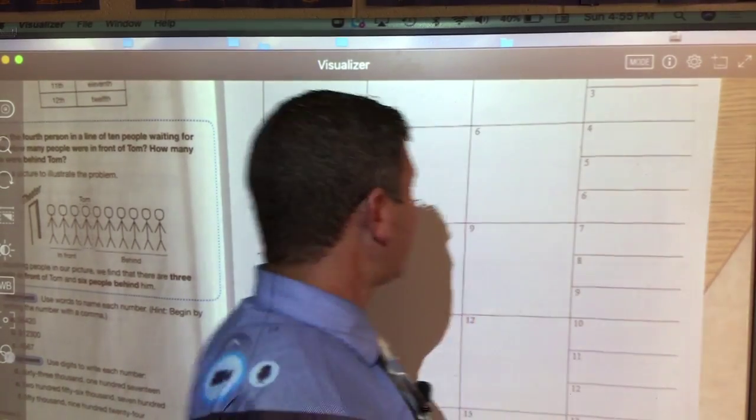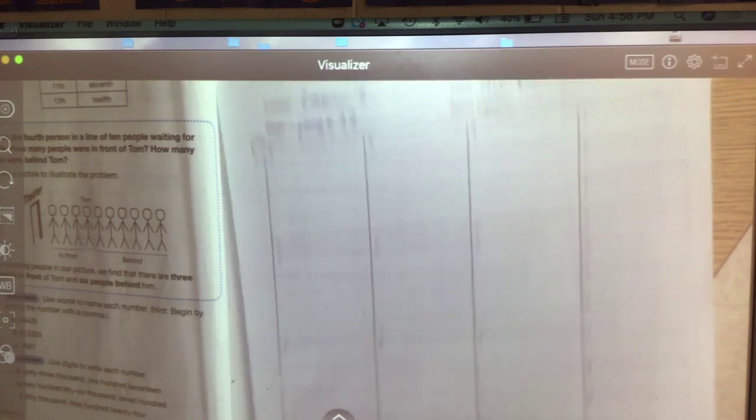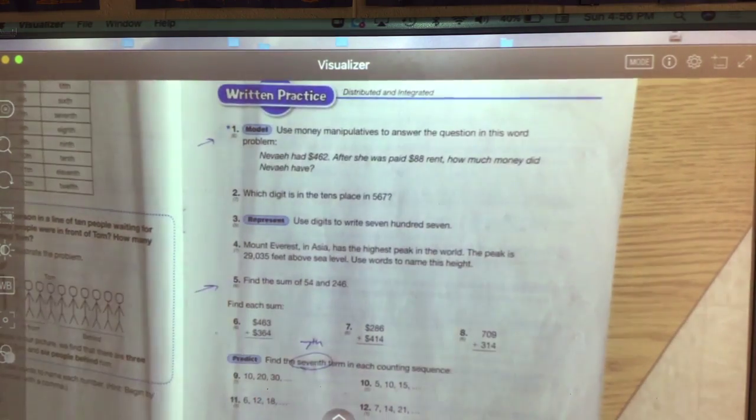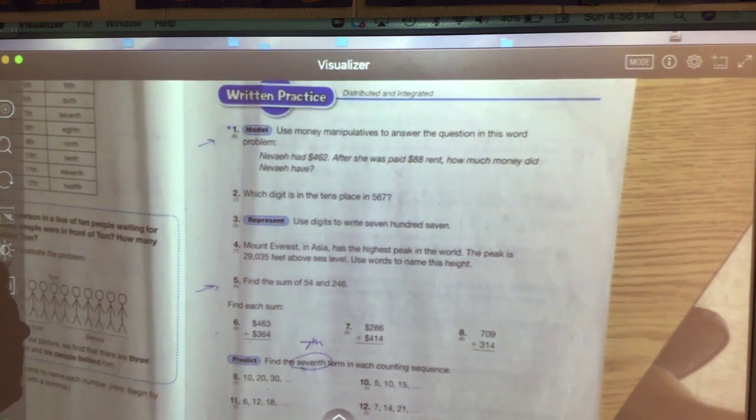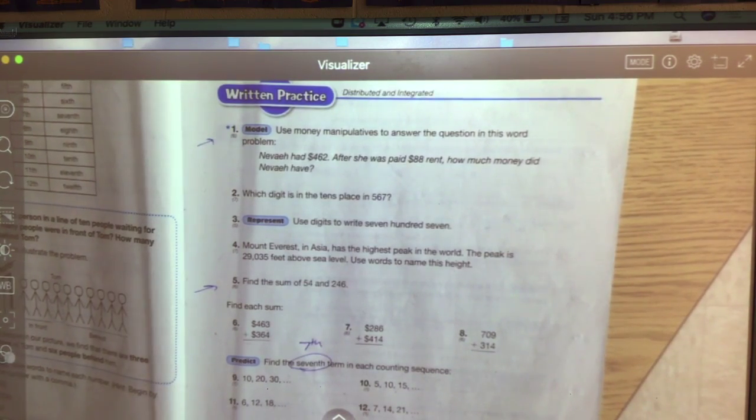Alright guys, lesson 7. Here's some example problems for us today. I picked out a bunch of them that I'd like to do as a team, starting with number 1 here at the top of the page. It says use money manipulatives to answer this question. Nevaeh had $452 after she was paid $88 rent. How much does she have now?